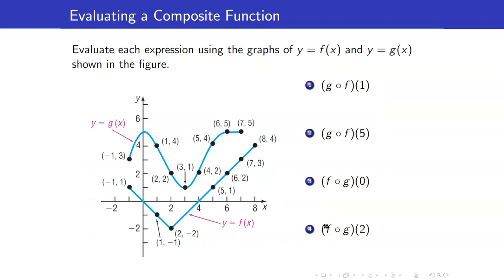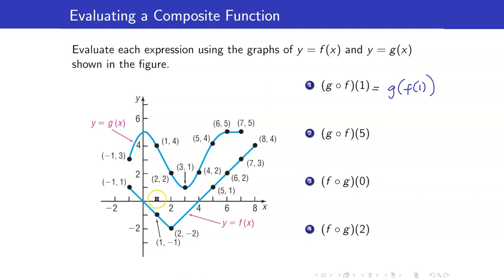We're given the graph of two functions f and g and we will evaluate these expressions. g circle f of 1 is g of f of 1. The meaning of f of 1 is the y-coordinate when x is equal to 1. Looking at the graph for f of x when x is equal to 1, this is the point 1 comma negative 1. The y-coordinate is negative 1, so this is your f of 1.